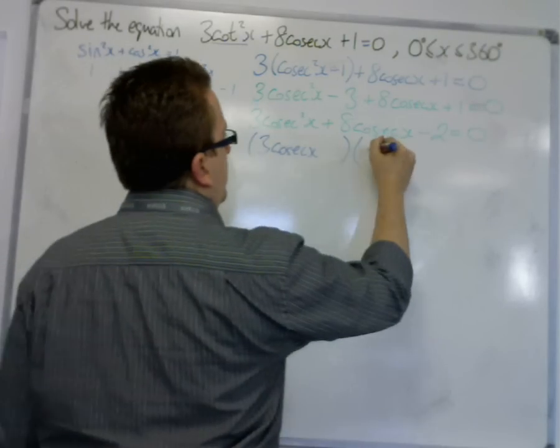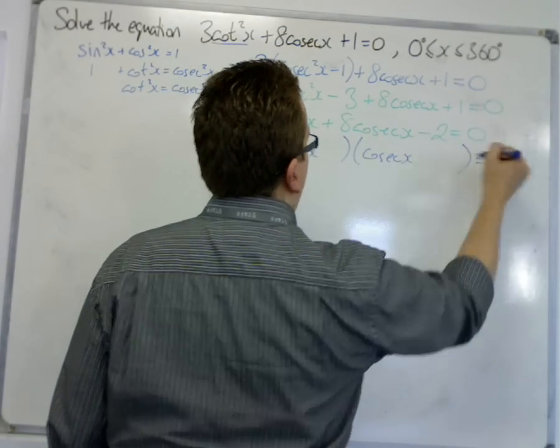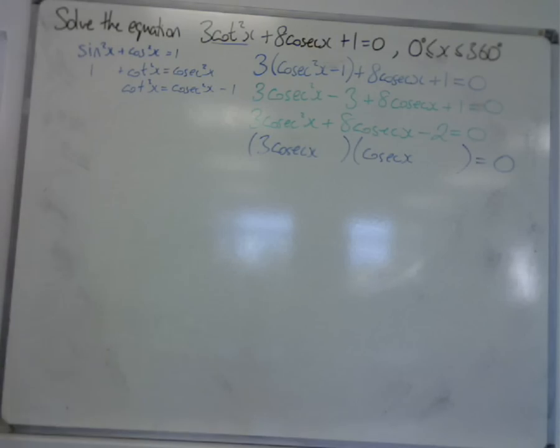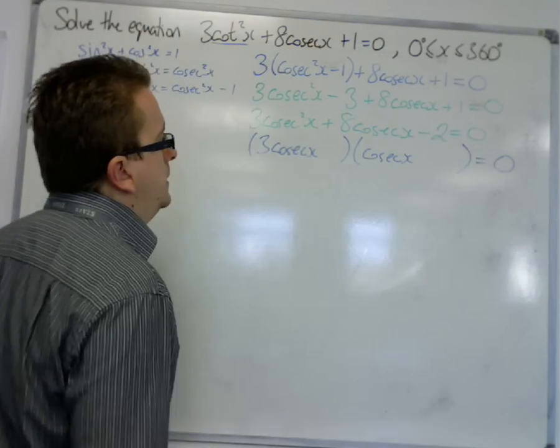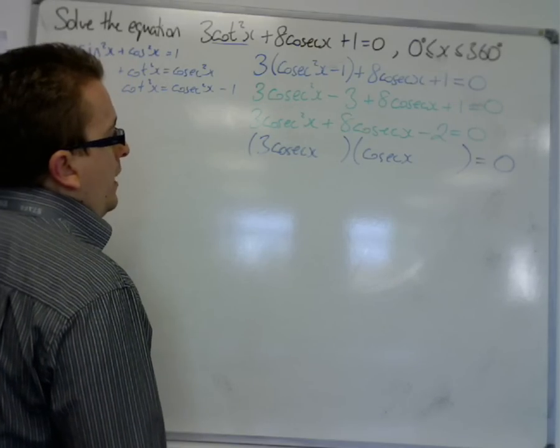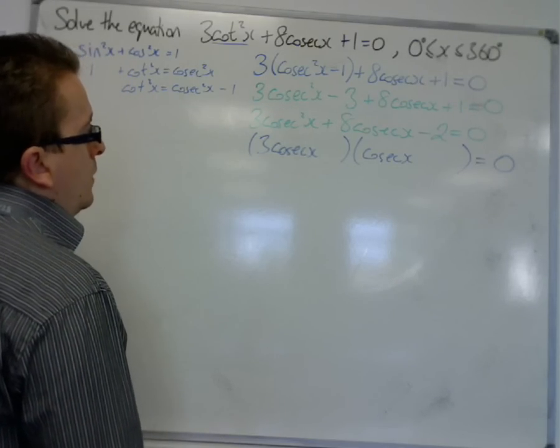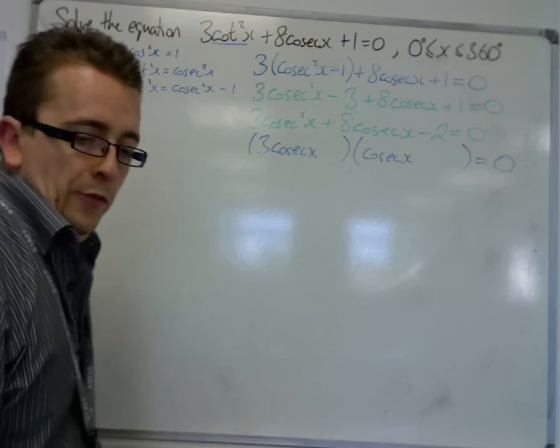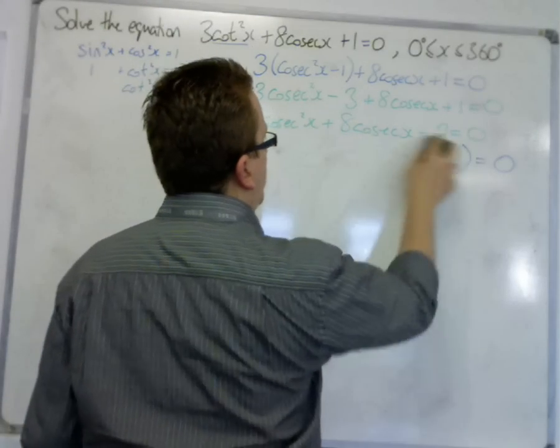We've got 3cosecx and we're going to have cosecx over here equals 0. We're going to have to have, to get plus 8, that could be a problem. So I don't think this factorizes, so I'm going to use the quadratic formula.